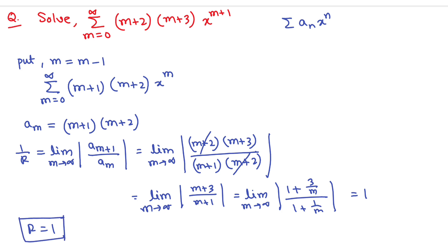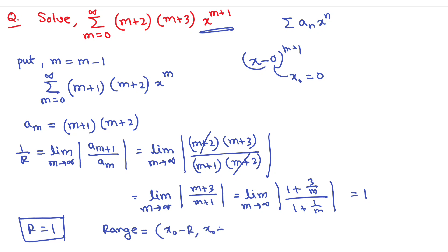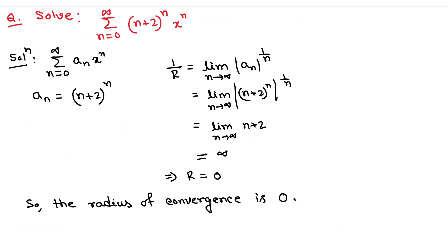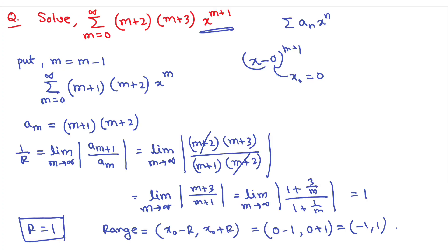The radius of convergence is 1. Since the series is of the form x^(m+1) with center x₀ = 0, the range of convergence is x₀ minus R to x₀ plus R, which is 0 minus 1 to 0 plus 1, that is minus 1 to 1. Power series is actually very easy — you can now practice your textbook problems. Thank you so much.